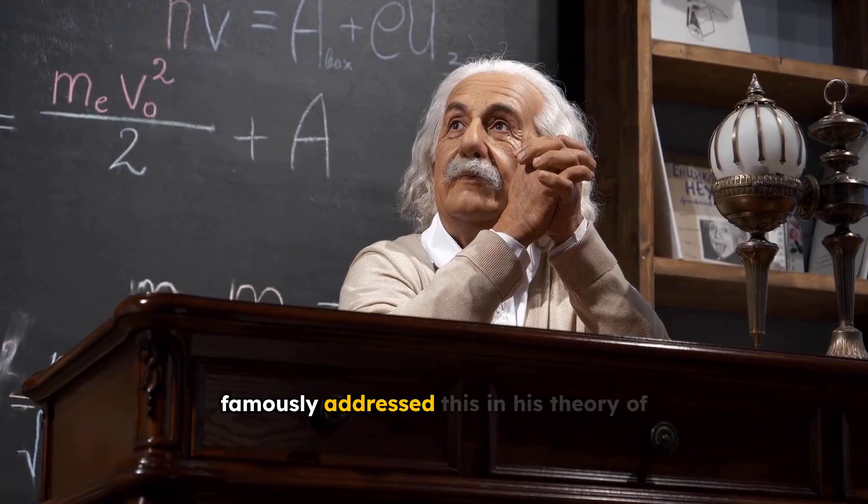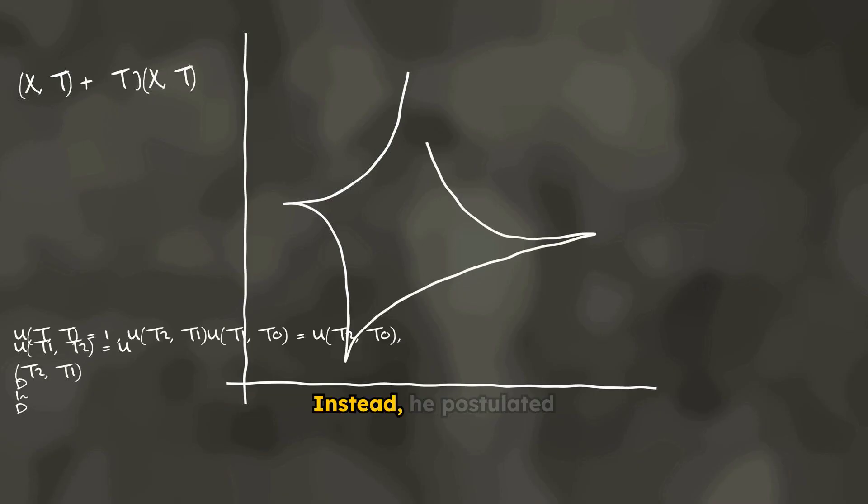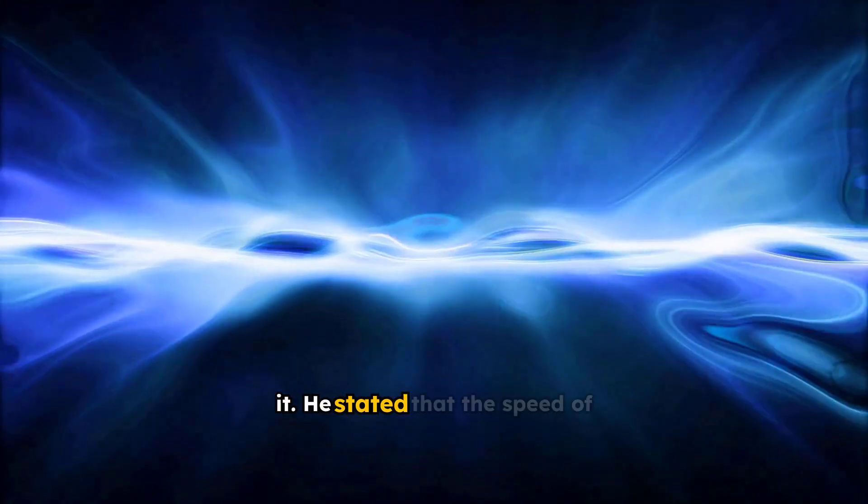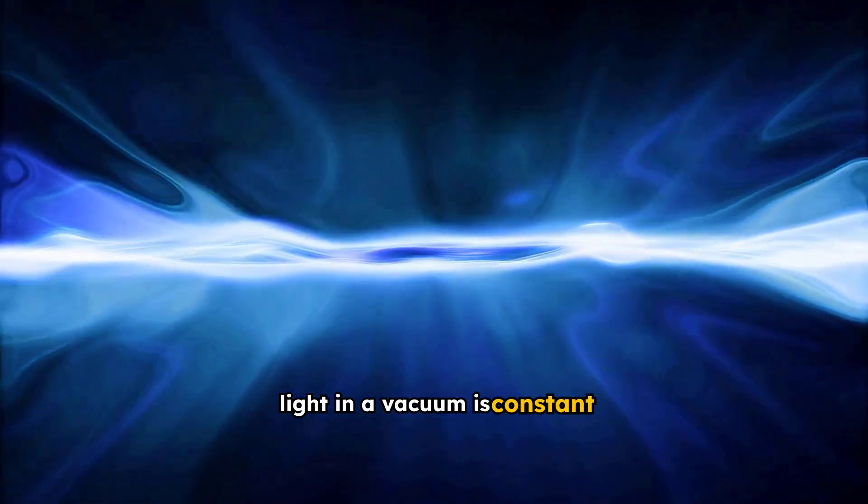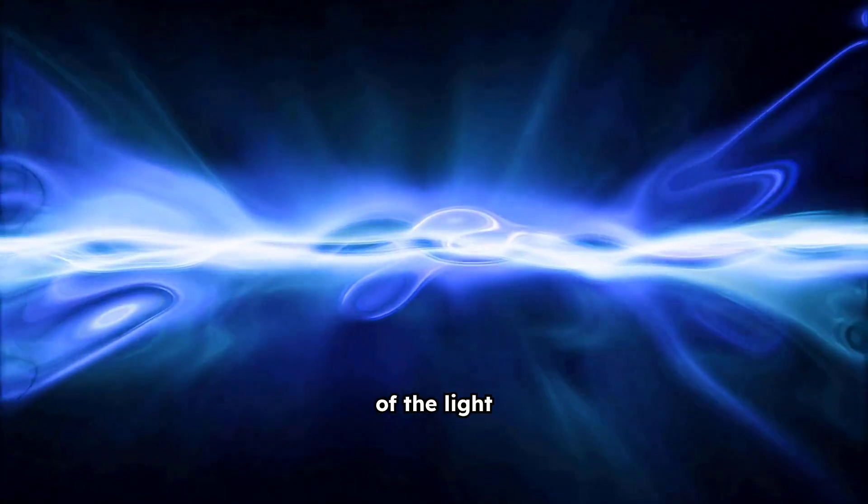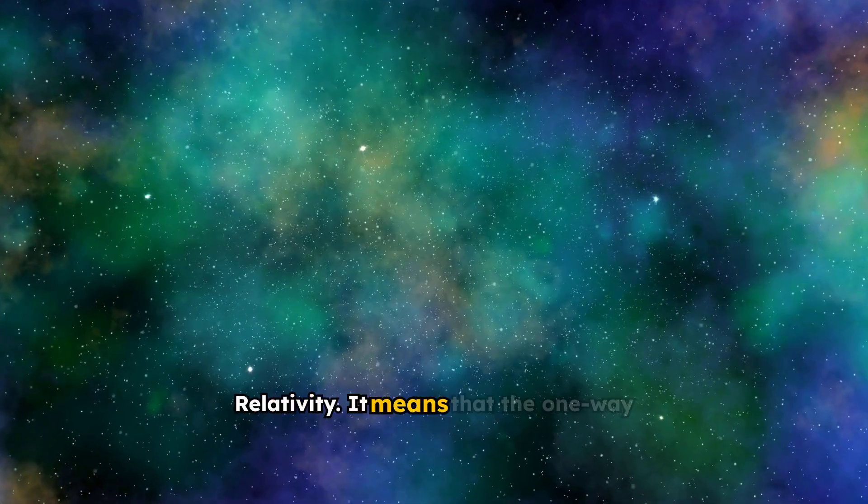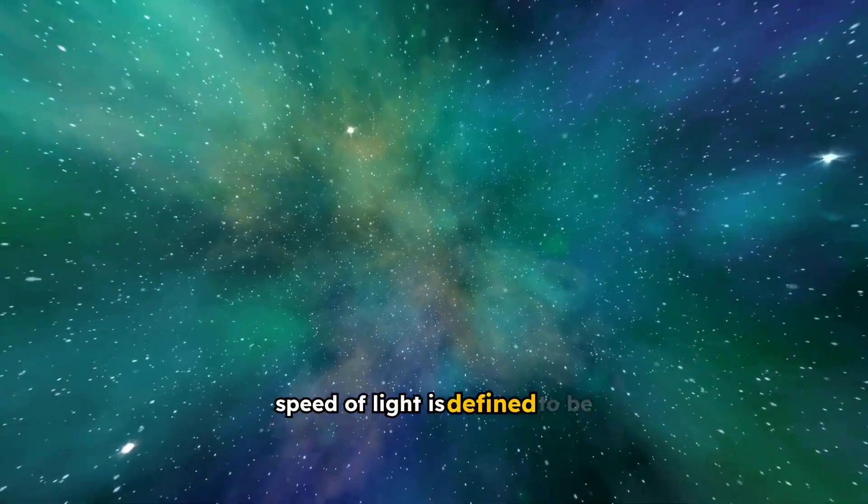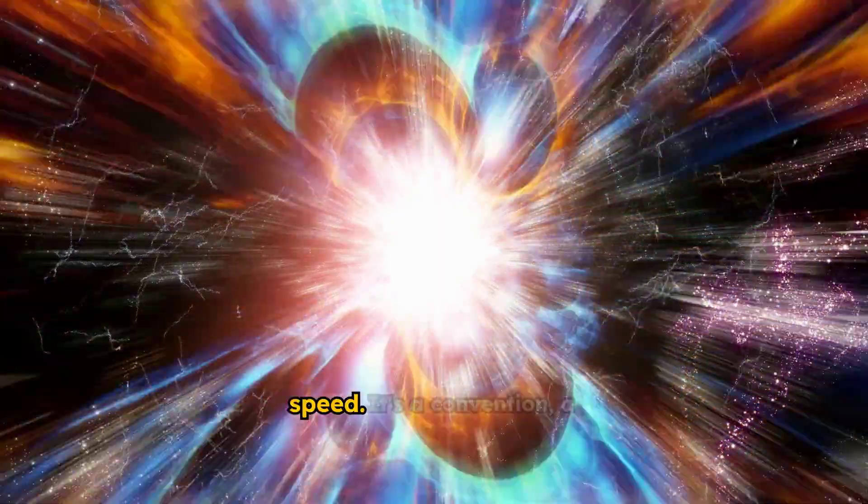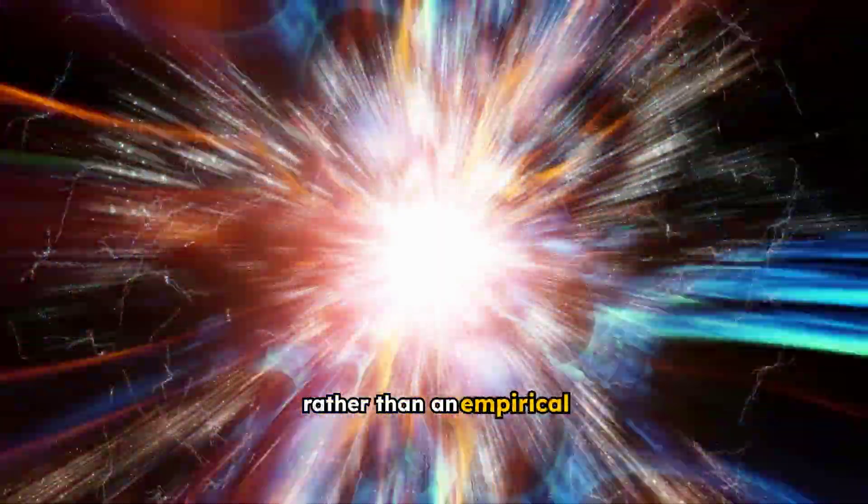Albert Einstein famously addressed this in his theory of special relativity. He didn't measure the one-way speed of light. Instead, he postulated it. He stated that the speed of light in a vacuum is constant for all inertial observers, regardless of the motion of the light source. This postulate is fundamental to special relativity. It means that the one-way speed of light is defined to be equal to the two-way speed. It's a convention, a foundational assumption, rather than an empirical measurement.